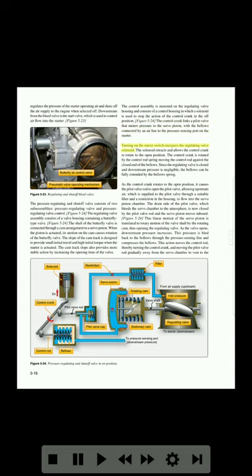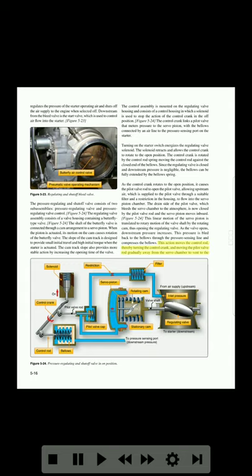Turning on the starter switch energizes the regulating valve solenoid. The solenoid retracts and allows the control crank to rotate to the open position. The control crank is rotated by the control rod spring, moving the control rod against the closed end of the bellows. Since the regulating valve is closed and downstream pressure is negligible, the bellows can be fully extended by the bellows spring. As the control crank rotates to the open position, it causes the pilot valve rod to open the pilot valve, allowing upstream air — supplied to the pilot valve through a suitable filter and a restriction in the housing — to flow into the servo piston chamber. The drain side of the pilot valve, which bleeds the servo chamber to the atmosphere, is now closed by the pilot valve rod, and the servo piston moves inboard. This linear motion of the servo piston is translated to rotary motion of the valve shaft by the rotating cam, thus opening the regulating valve. As the valve opens, downstream pressure increases. This pressure is bled back to the bellows through the pressure sensing line and compresses the bellows. This action moves the control rod, thereby turning the control crank and moving the pilot valve rod gradually away from the servo chamber to vent to the solenoid.